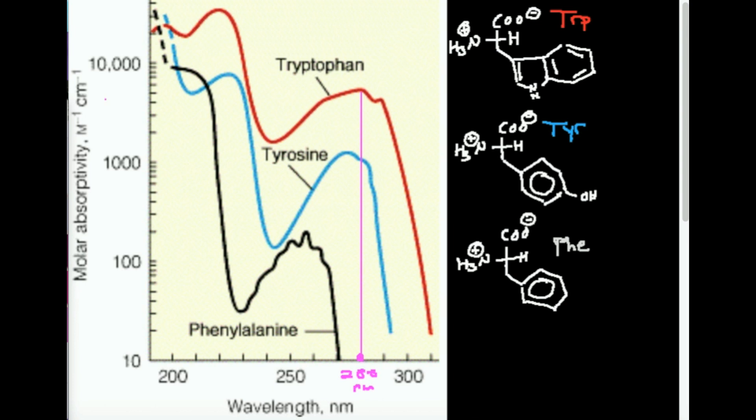It actually does, but notice this graph starts at 10. If you actually go a little below 10, it'll actually sort of curve over very slightly, and it'll actually be a little bit of absorbance at 280. However, we more or less say that phenylalanine absorption at 280 is pretty negligible. Pretty negligible.